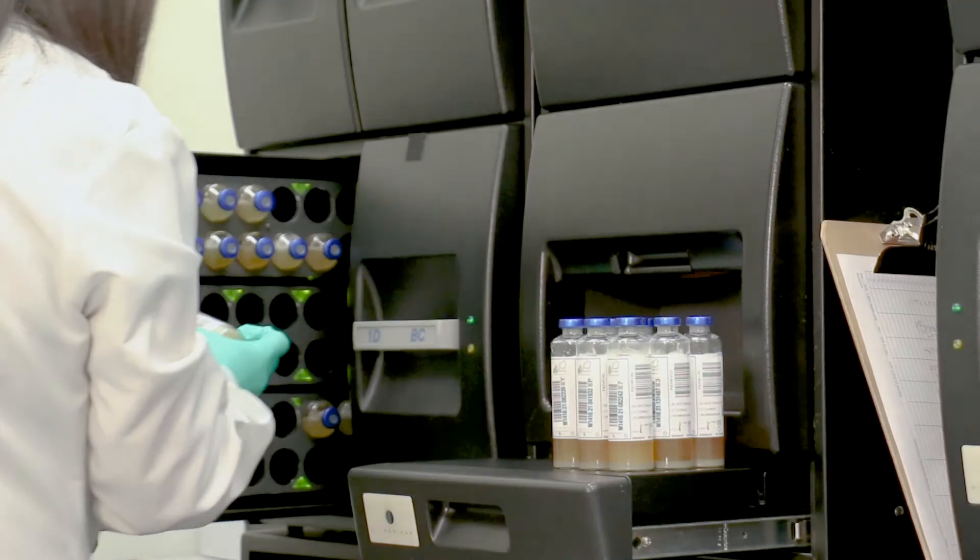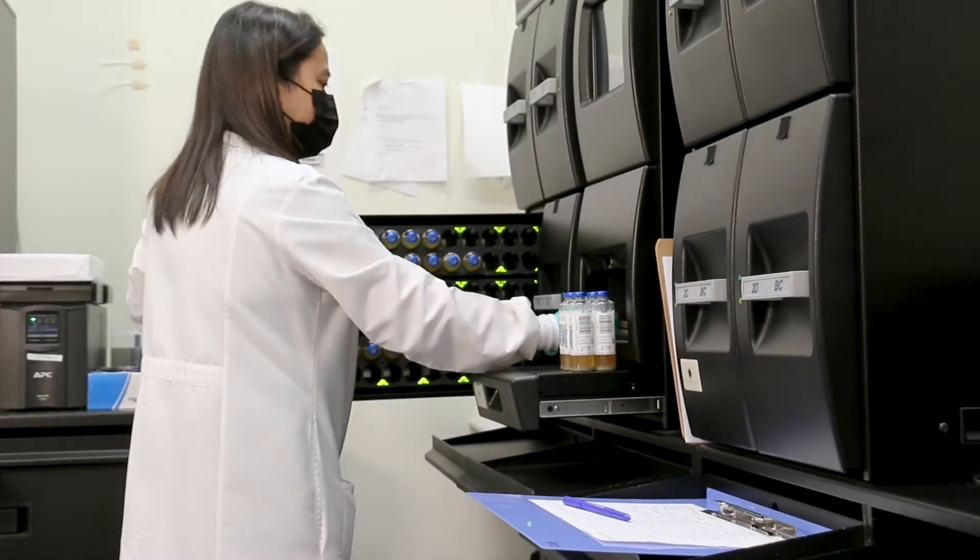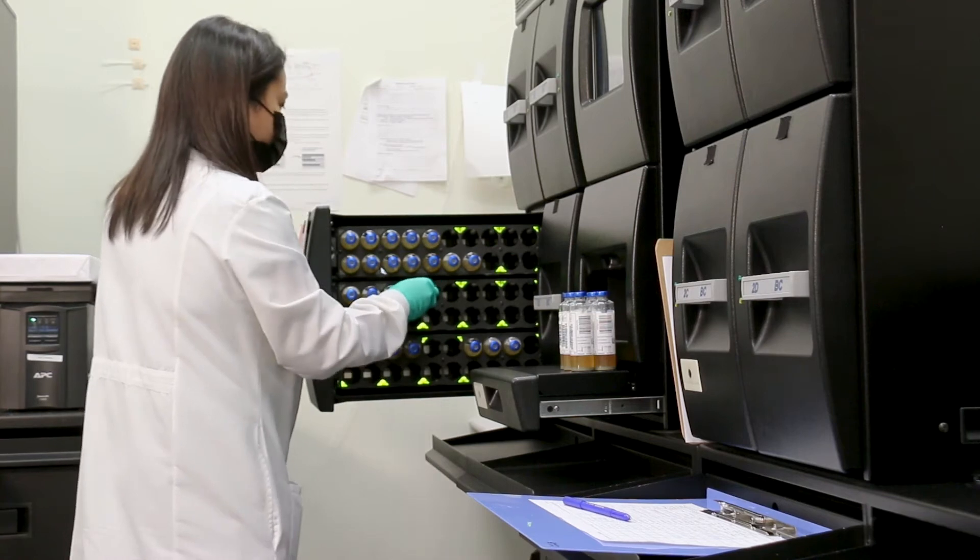If there's any bacterial growth, a disc on the bottom of the bottle will change color, the machine will detect it and alert us, and we can pull the unit before it gets transfused.